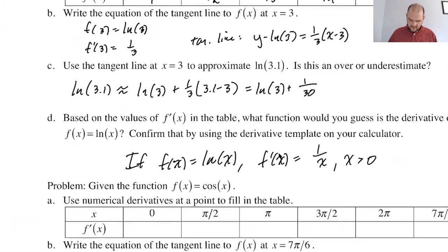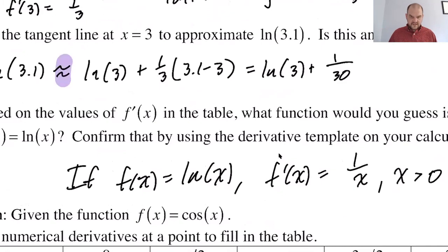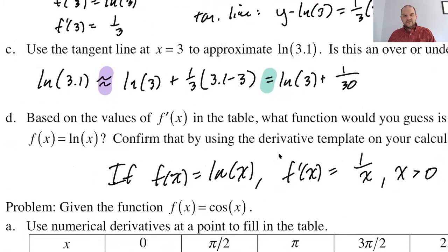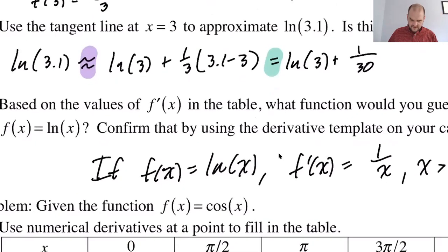Let me explain one thing really quickly while I'm here. You'll notice that I initially have used this approximately equal to, but then here I use this equals. So what's happening is the natural log of 3.1 is approximately the natural log of 3 plus 1 over 30, but when I simplify it, it is exactly equal. So as you read it, the approximately still applies to the thing on the left of it, but then to the right of it I'm saying those two things are exactly equal. That's totally fine. Some people don't like that.